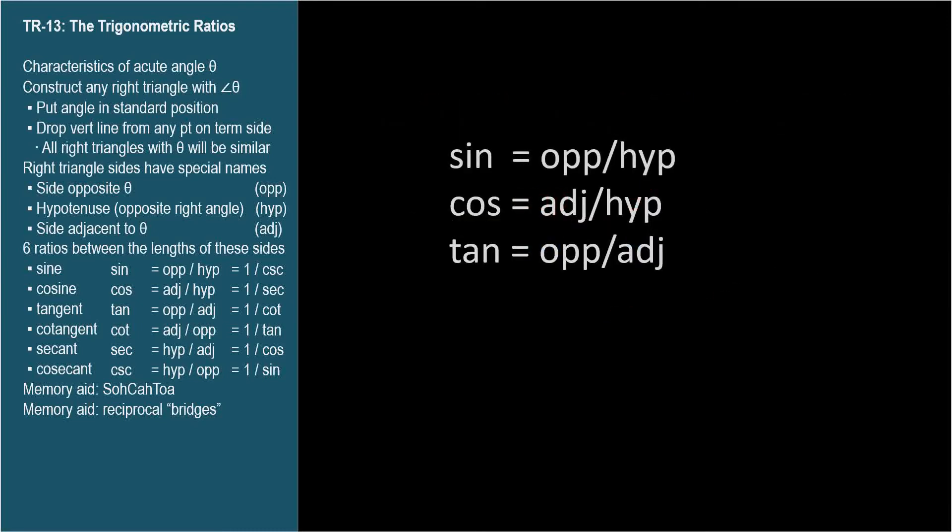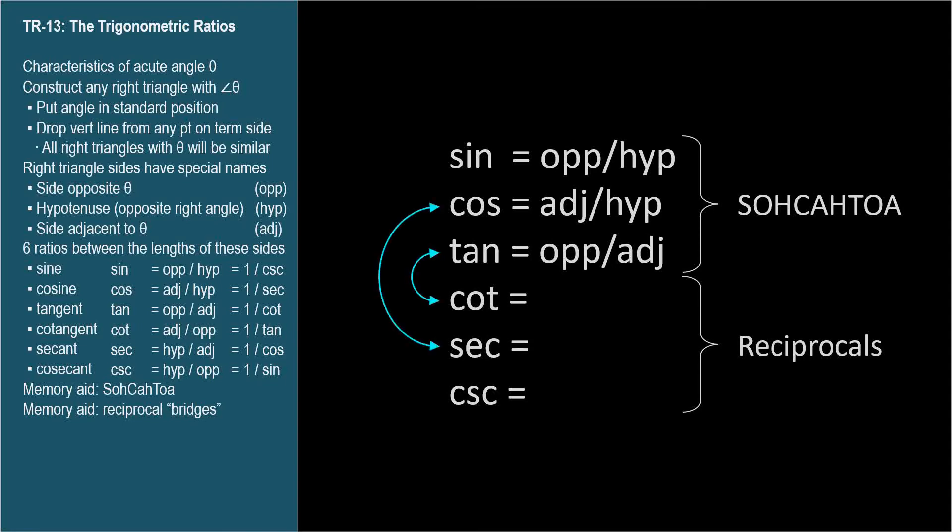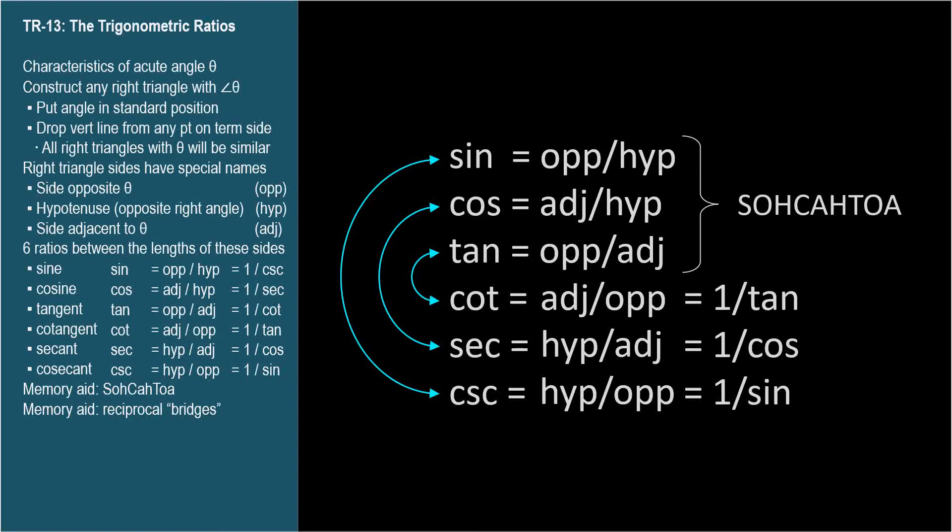SOHCAHTOA covers sine, cosine, and tangent, which are the most commonly used trig functions. The last three trig ratios are reciprocals of the first three. When the ratio names are listed in this order, the reciprocal pairs can be formed by building three bridges. Starting at the bottom, cosecant is the reciprocal of sine. SOHCAHTOA reminds us that sine is opposite over hypotenuse, so cosecant is hypotenuse over opposite. Secant is the reciprocal of cosine, so hypotenuse over adjacent. And cotangent is the reciprocal of tangent, so adjacent over opposite. All you need is SOHCAHTOA, remember the trig names in this order, and know the bridge trick, and you'll know all the ratios with hardly any memorization.